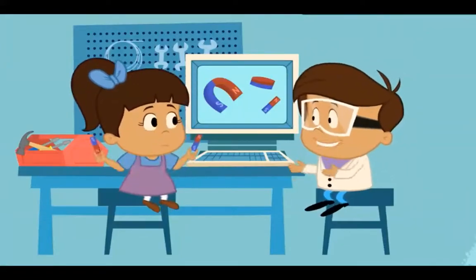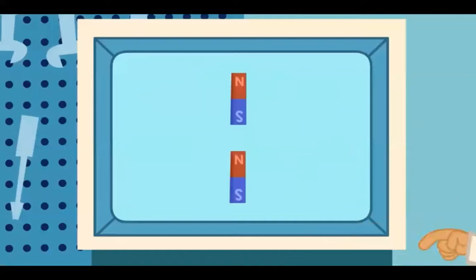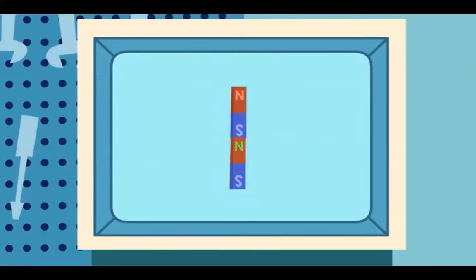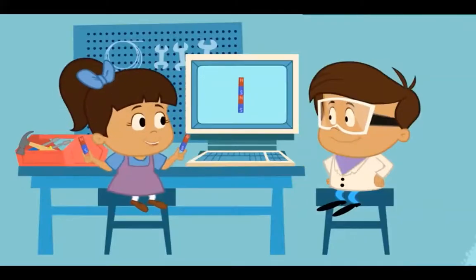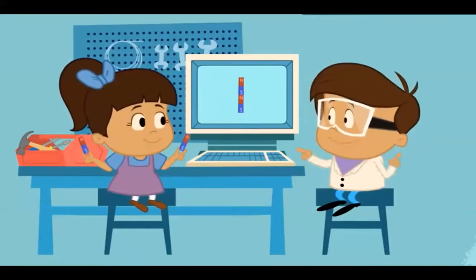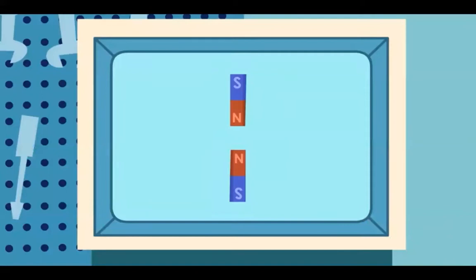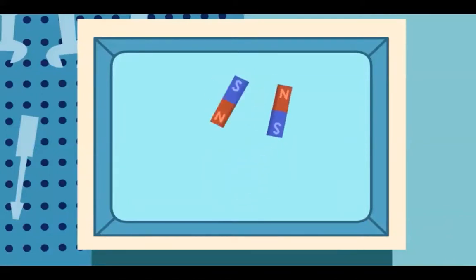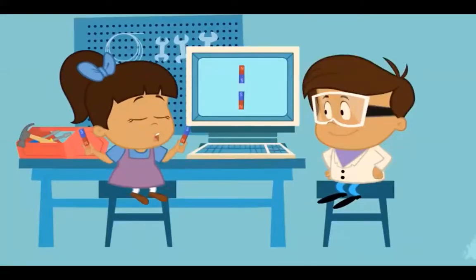Now try touching the ends together and see what happens. That's because opposite poles of magnets pull each other together — we say that they attract each other. The north pole of one magnet attracts the south pole of the other. Now flip one around and try touching them again. Whoa, they don't want to touch! That's because the same poles push each other away. The north pole of one magnet will always push away the north pole of another magnet if they come too close — same thing happens with the south poles. When two magnets push each other away, we say they repel each other.